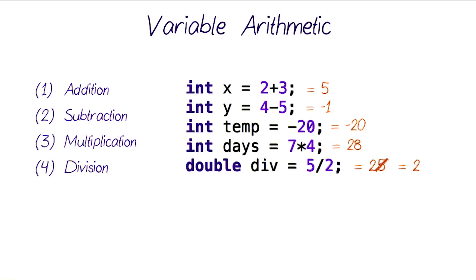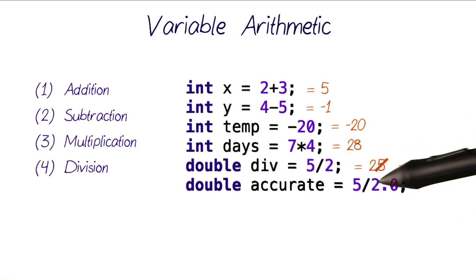But if you want to calculate the accurate division result, you have to make sure that at least one of those two numbers is a double itself. Like, for example, double accurate equals 5 divided by 2.0, which is the exact same value as this, except that 2.0 now forces this division to result in a double value and store that into our variable accurate.